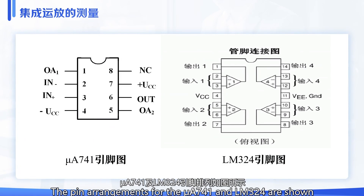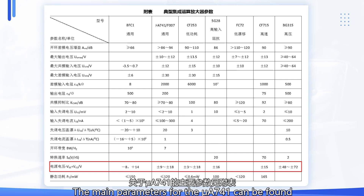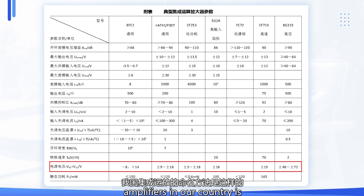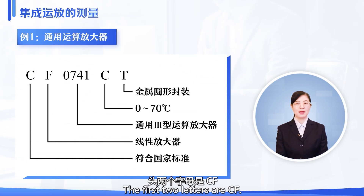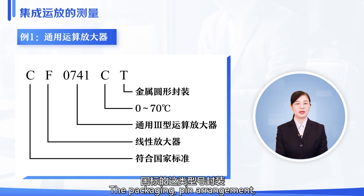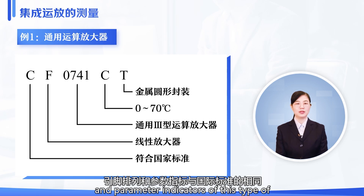The pin arrangements for the MU A741 and LM324 are shown in the figure. The main parameters for the MU A741 can be found in the appendix. Here we can see the MU A741 is powered by a dual power supply. The naming method for integrated operational amplifiers in our country follows the national standard. The first two letters are C, F. The letters or numbers following C, F are the same as the international standard. The packaging, pin arrangement, and parameter indicators of this type of national standard are the same as the international standard.